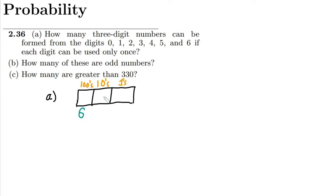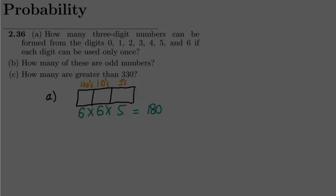At the tens location, I can also write 0, but not the digit already used in the hundreds spot. So out of seven numbers, one has been used, leaving 6 choices. At the units spot, I can use any number except the two already used, so seven minus two gives 5 choices. Multiplying them together: 6 × 6 × 5 = 180. So the total number of three-digit combinations is 180.